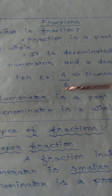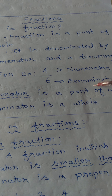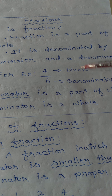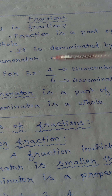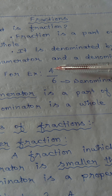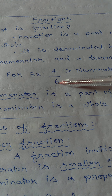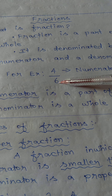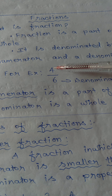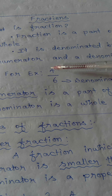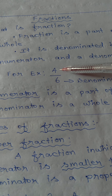The numerator is a part of the whole number. The denominator represents the whole number. The whole number is a part of the numerator.